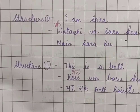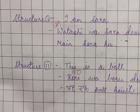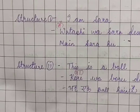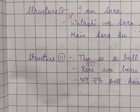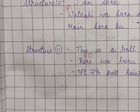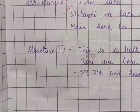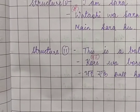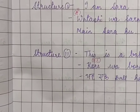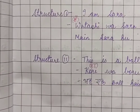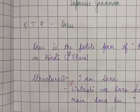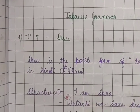'Kore wa boru desu' — this is a ball. Similarly, this is a lamp: 'Kore wa ranpu desu.' If you don't know the Japanese word for something, for practice just use it as it is — like 'lamp.' Also, 'I am an apple' — apple is 'ringo' — so 'Watashi wa ringo desu.' This is the basic Japanese structure.